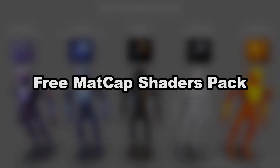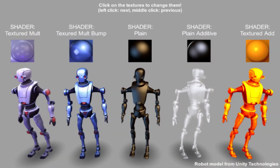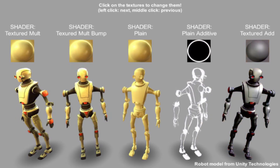Number 5: Free Matte Cap Shaders Pack. Out of the box, Unity doesn't support matte caps, which is a shame since they can be used to give models a really nice look without the intense resources other shaders may need. This is because matte caps sample lighting and shading information from an image rather than using actual shading. This can be extremely useful for mobile games and those looking to aim at low-end hardware.